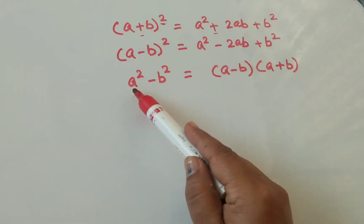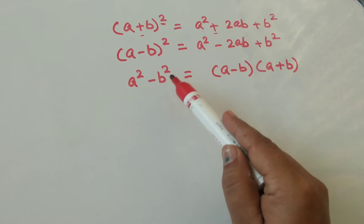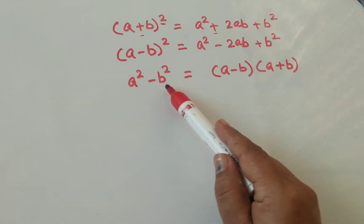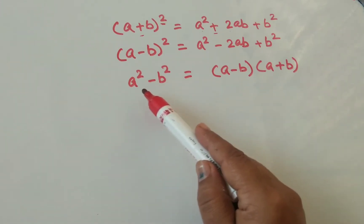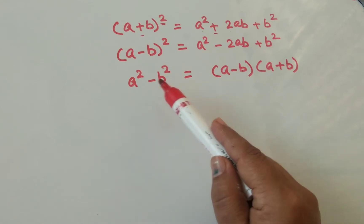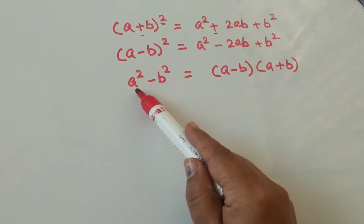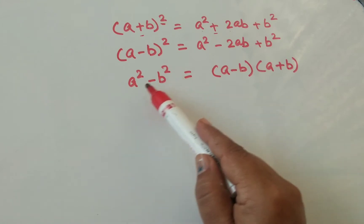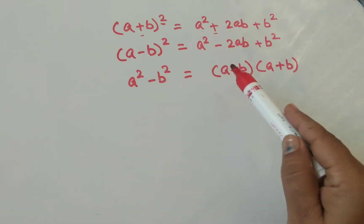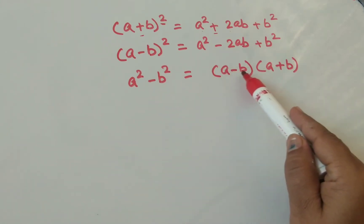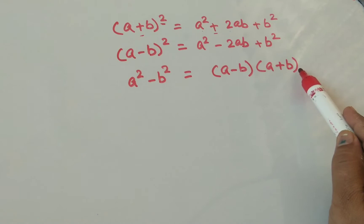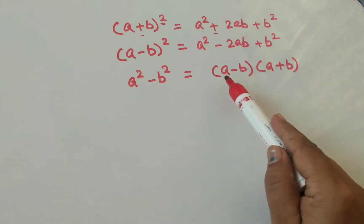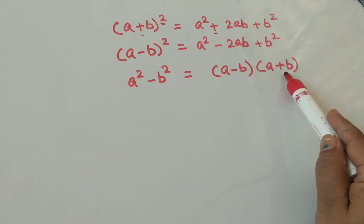The third identity is a square minus b square. If you observe here, there is no whole square. Here we have: first number — a square minus b square. When this identity appears, we write it as (a minus b)(a plus b). To remember this, you can use: once minus, once plus.